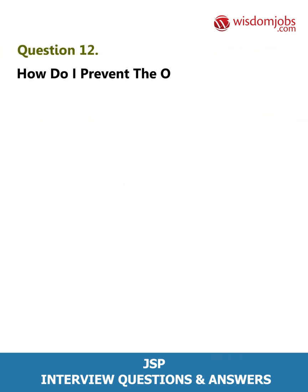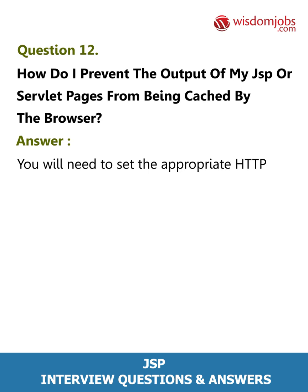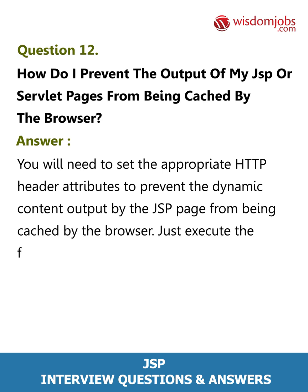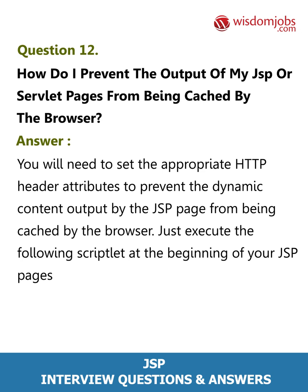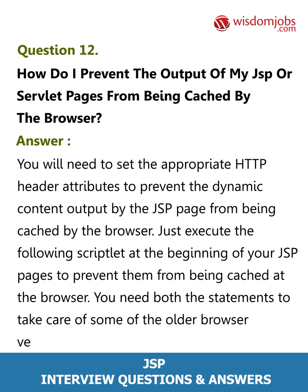Question 12: How do I prevent the output of my JSP or servlet pages from being cached by the browser? Answer: You will need to set the appropriate HTTP header attributes to prevent the dynamic content output by the JSP page from being cached by the browser. Execute the following scriptlet at the beginning of your JSP pages to prevent caching. You need both statements to take care of some of the older browser versions.